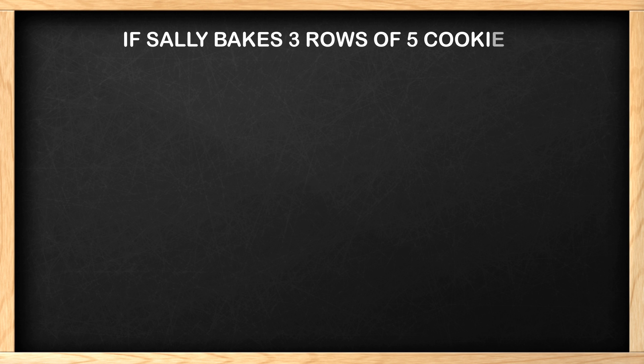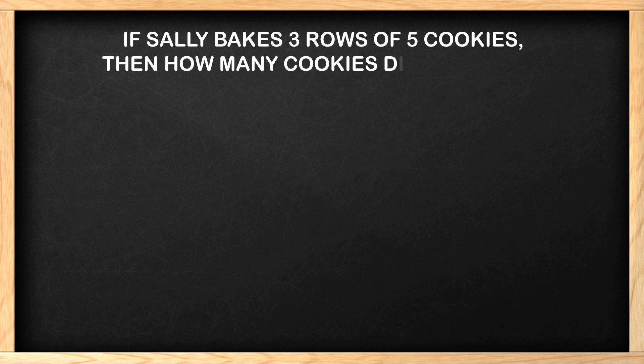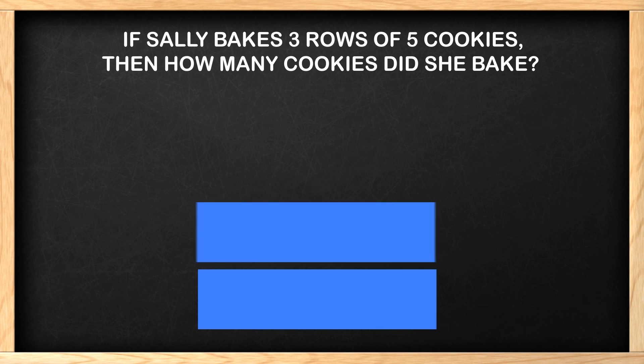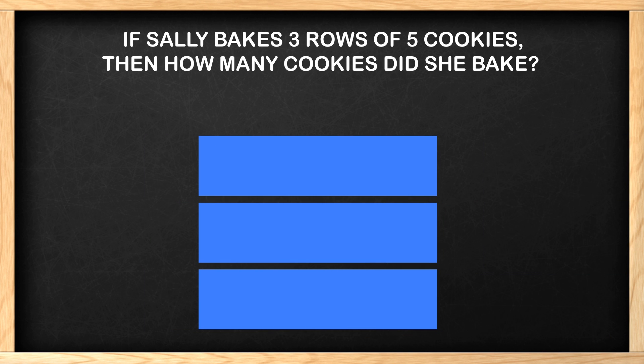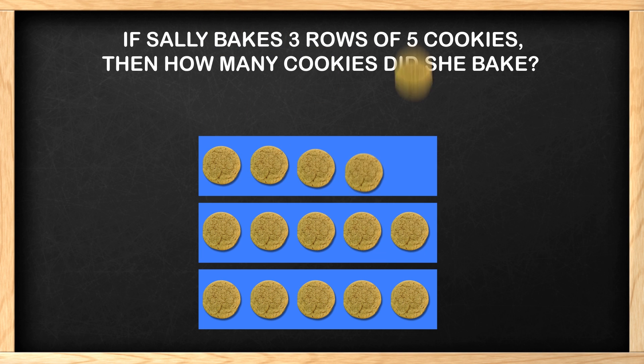Here comes a word problem we can take a look at. The problem says if Sally bakes three rows of five cookies, then how many cookies did she bake? To solve this, you can draw the rows of cookies. We know we have three rows, so let's bring in three rows. We have three rows here we can put the cookies in. How many cookies does the problem say are in each row? There are five cookies in each row. Great job!